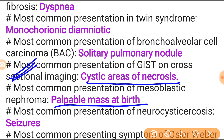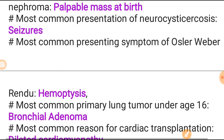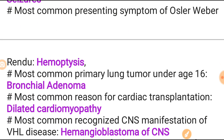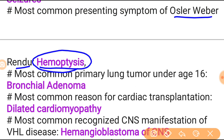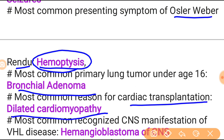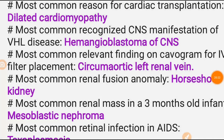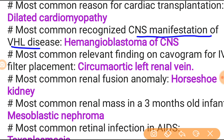Most common presentation of mesoblastic nephroma is abdominal wall mass at birth. Most common presentation of neurocysticercosis is seizure - most important topic. Most common presenting symptom of osler-weber-rendu syndrome is hemoptysis - important topic. Most common primary lung tumor under age 16 is bronchial adenoma. Most common reason for cardiac transplant is dilated cardiomyopathy.